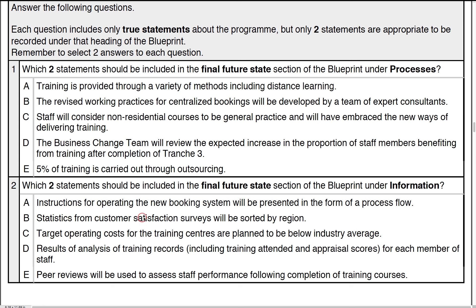Option B: statistics from customer satisfaction surveys will be sorted by region. That's certainly something to look at because it's about performance measurements — how the transformational change has taken place in the new vision. So that would definitely count as information. Option C: target operating costs for the training centre are planned to be below an industry average. That's more of a process section — operating models and costs are part of what we describe in the processes section. So C is not correct.